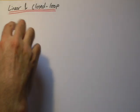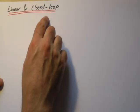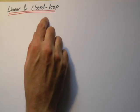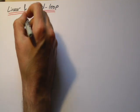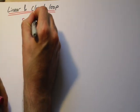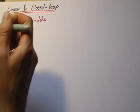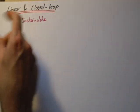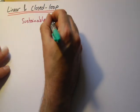A bit more B7. This is about linear and closed loop systems. The key word for all of this is sustainable, and sustainable means that you can continue to use something over a long period of time.